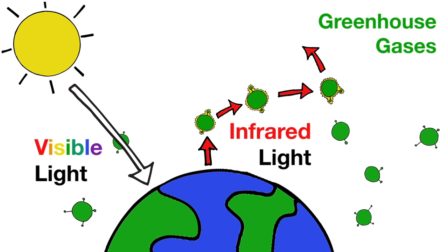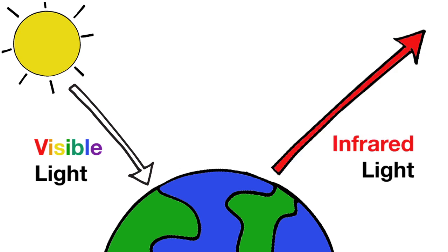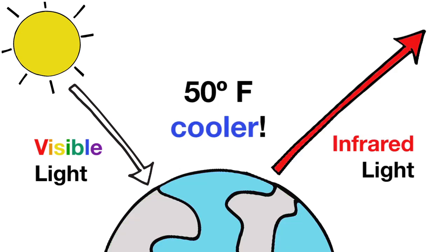The added time this energy hangs around has helped keep earth warm enough to support life as we know it. Without this greenhouse effect, caused by these greenhouse gases in the atmosphere, the earth's average surface temperature would be about 50 degrees Fahrenheit cooler, which is well below the freezing point for ice.